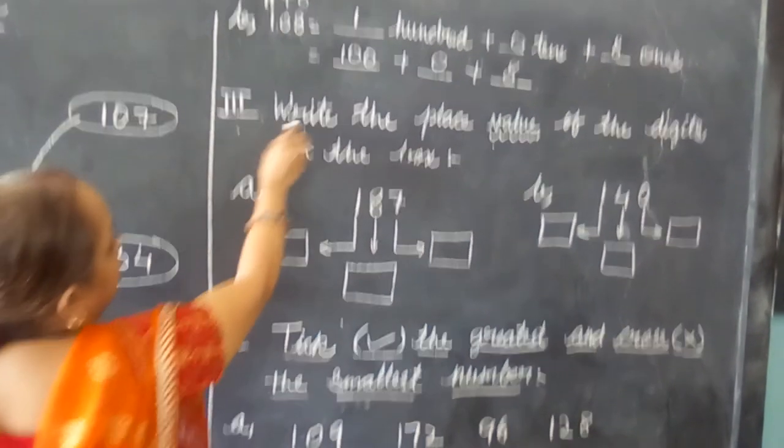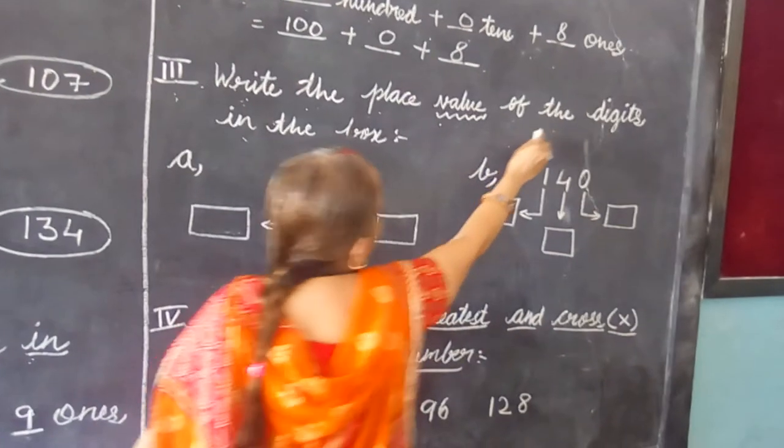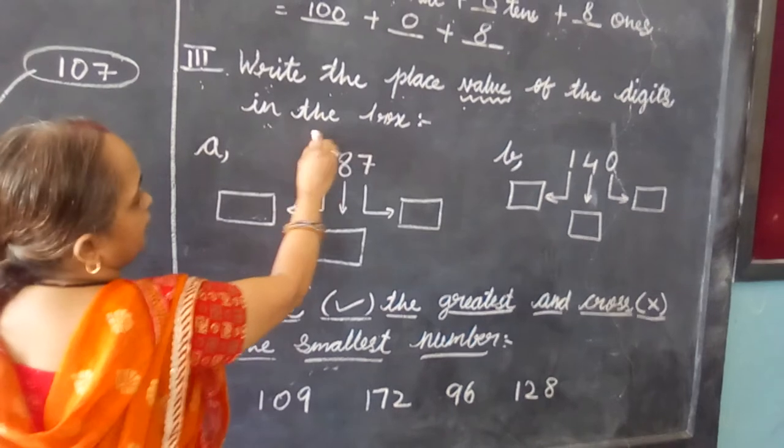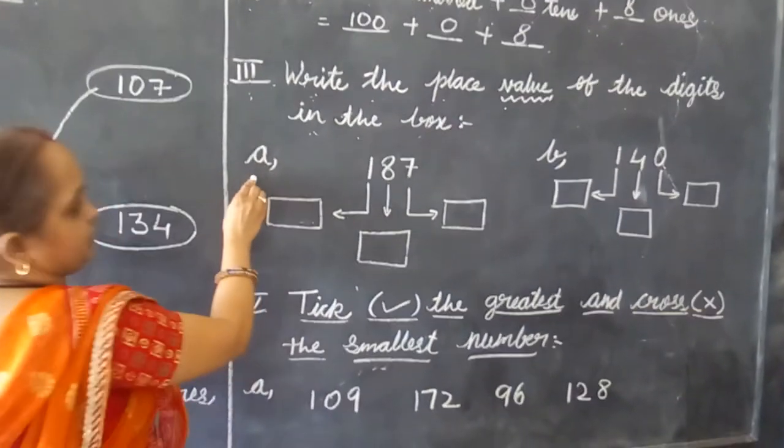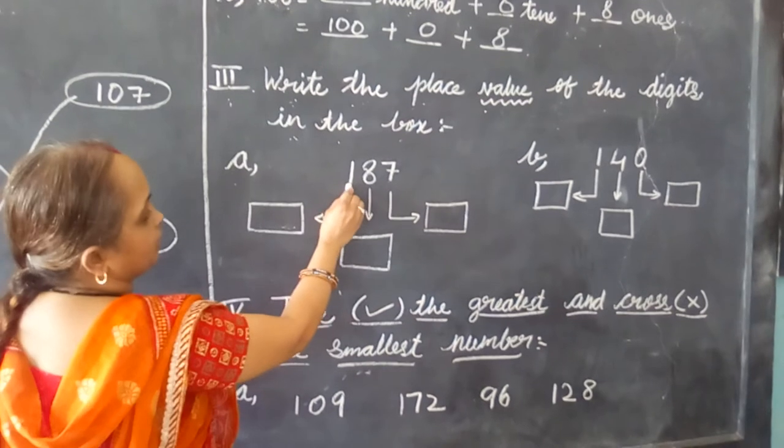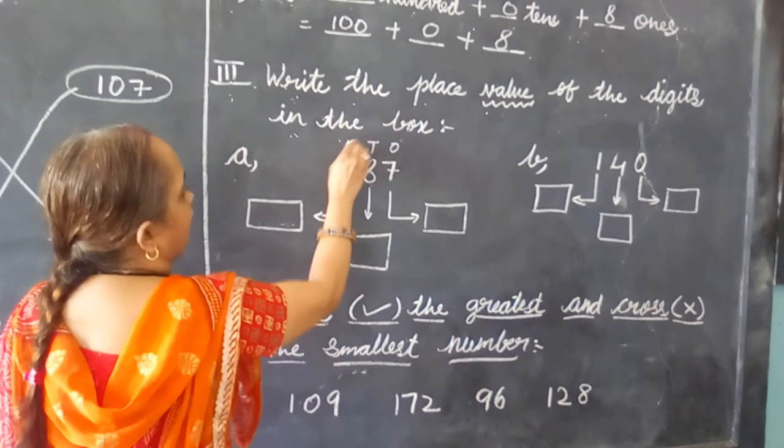Question number 3: write the place value of the digits in the box. So our question is, the first one is, the number given is 187. Write here 1, 8, 7.